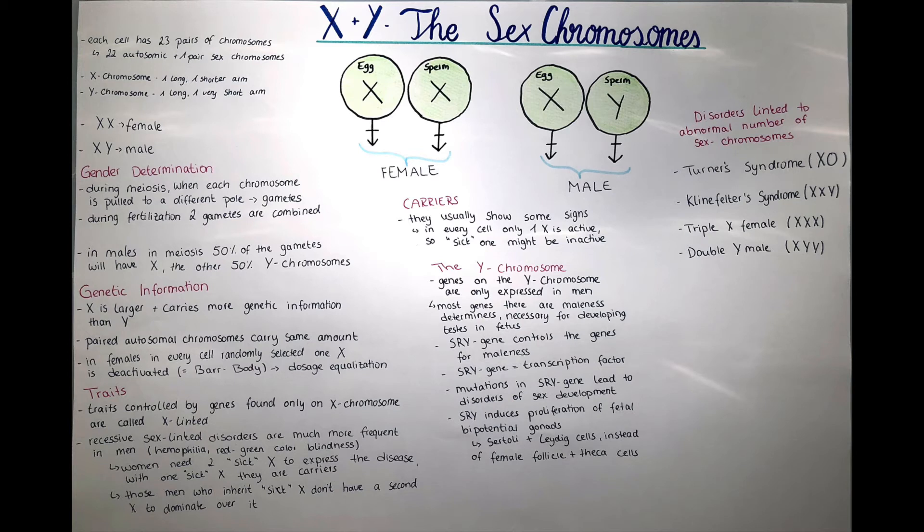In men who inherit one affected X chromosome, they don't have a second X chromosome to counteract or dominate over this gene, at least in recessive disorders. Examples for these kind of recessive sex-linked disorders are hemophilia and red-green colorblindness. As mentioned before, they are much more frequent in men.